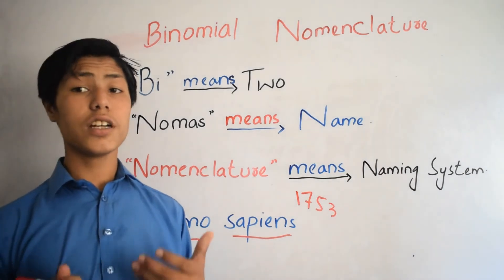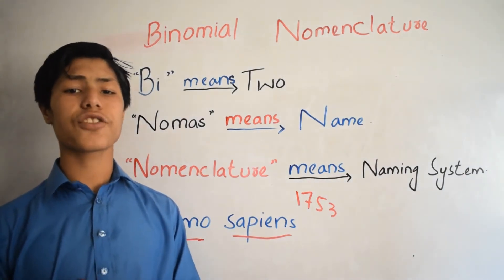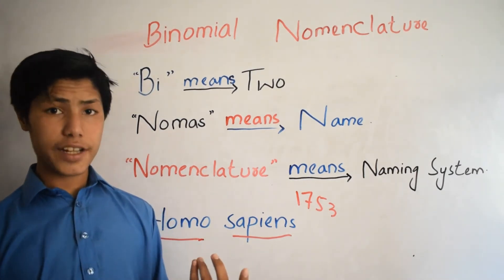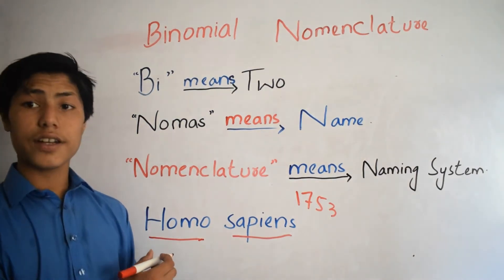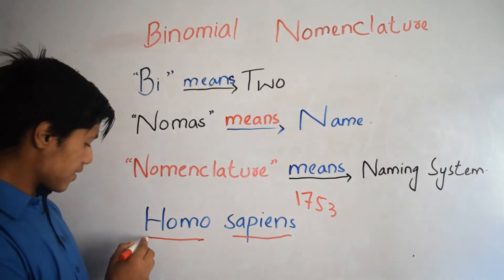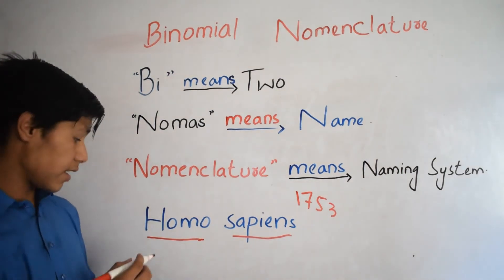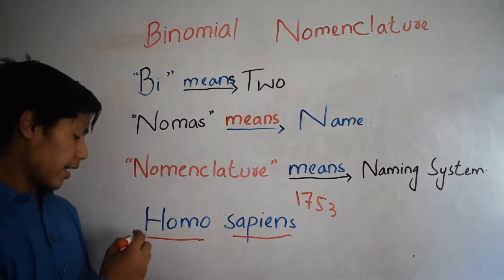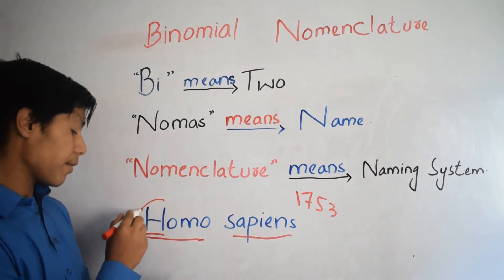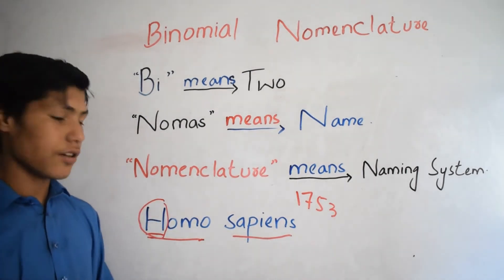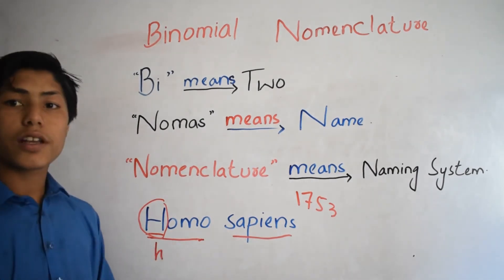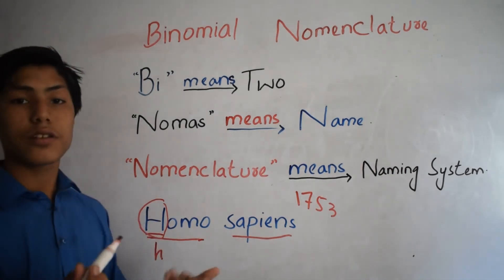Now let's come to the third rule of binomial nomenclature. The first name refers to genus and is called the generic name, and this name starts with a capital letter. You can see this is homo — this is the generic name. The third rule states the first name starts with a capital letter; H is capital here.